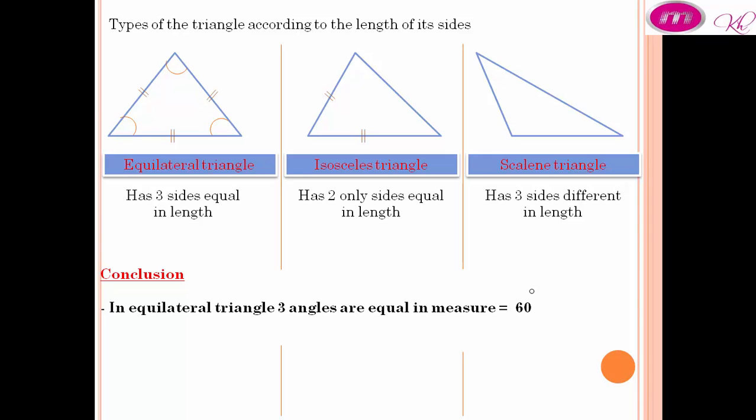In an equilateral triangle, 3 angles are equal in measure, equal to 60 degrees.